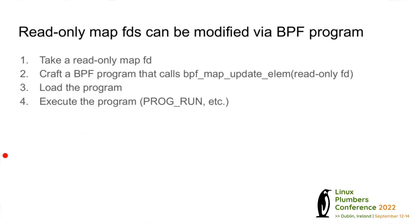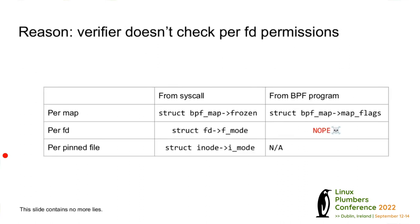Problem one: you can write to a map even with a read-only file descriptor if you have access to BPF programs. You just create a program that does a map_update_elem with the read-only file descriptor, load it, somehow execute it, and it works. The reason is that the verifier doesn't actually check the per-file-descriptor permissions when you try to verify and load the program into the kernel.